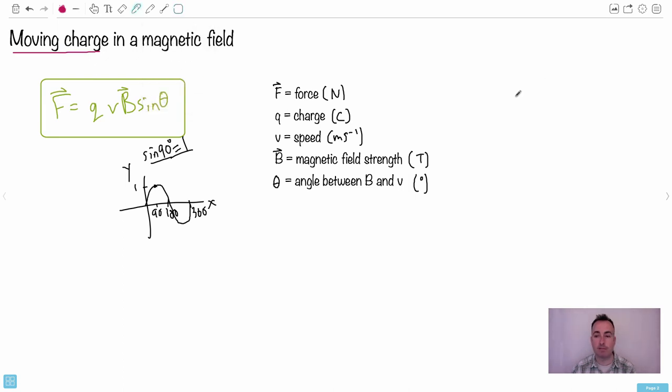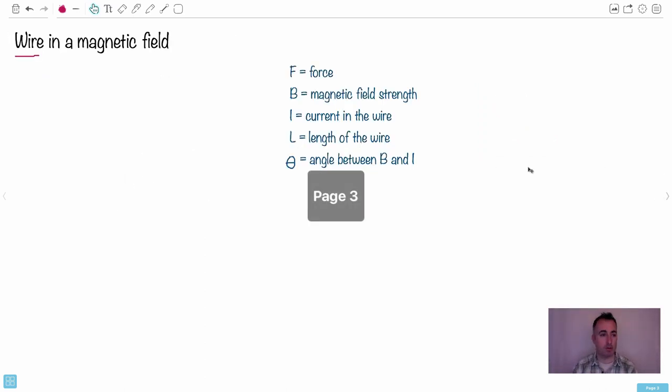Just so you know, this is sometimes nice to know. Just remember that one. I'll write it like this: if theta equals 90 degrees, we know that sine of 90 equals 1. This is maybe a good sort of trick for you. That's it. That's not so bad, is it? Then we have another equation. What if we have a wire in a magnetic field?